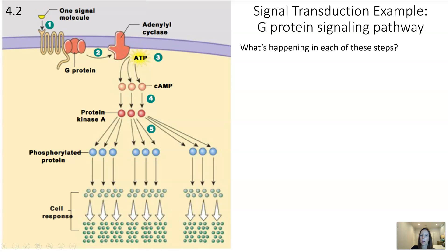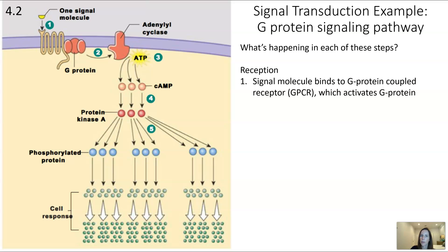Zooming in more specifically, there are five labeled steps. Step one is reception: the signal molecule binds to a G protein coupled receptor, a receptor tied to a special protein called a G protein. When the signal molecule binds, it changes the shape of the receptor so that the G protein can cause more changes down the cascade.